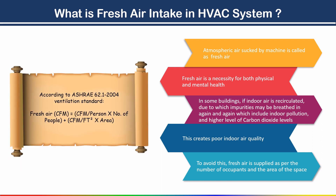According to ASHRAE 62.1-2004 ventilation standard, to find out the fresh air CFM, we use the formula: Fresh Air CFM = (CFM per person × number of people) + (CFM per square feet × area). Using this formula we calculate the fresh air.